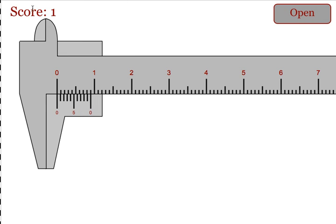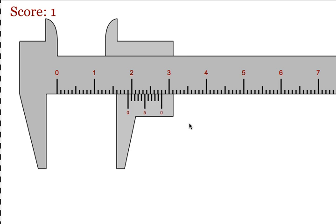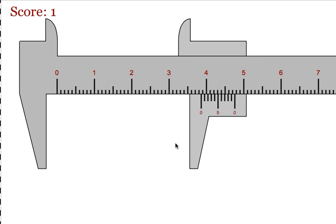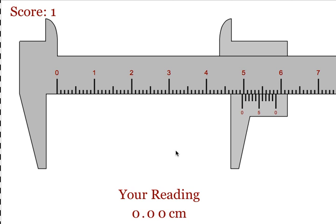They will hit check, it will give them a score of 1, it will close the caliper, and they will hit open. Students are expected to get 4 in a row right before they can go back and use the actual caliper.